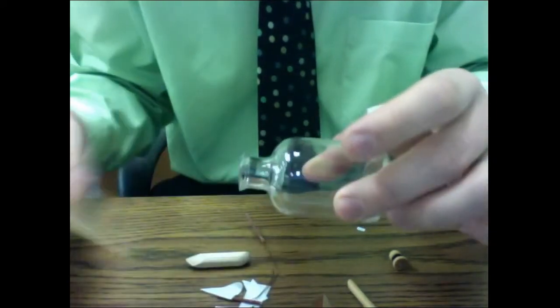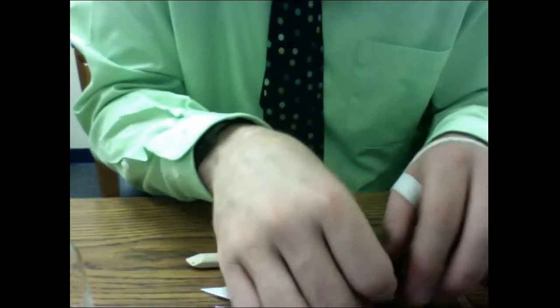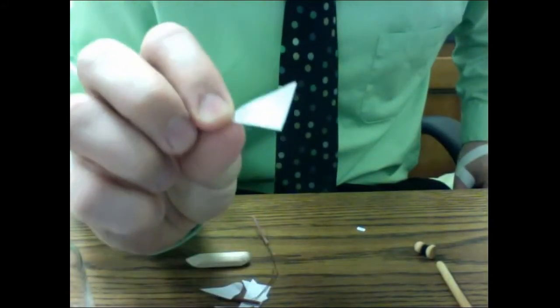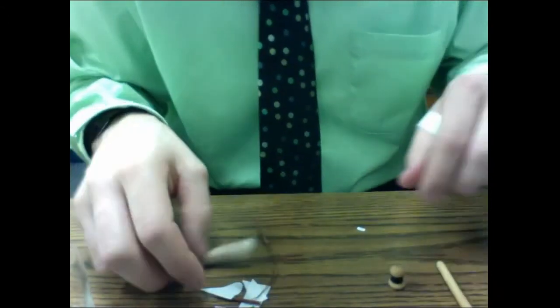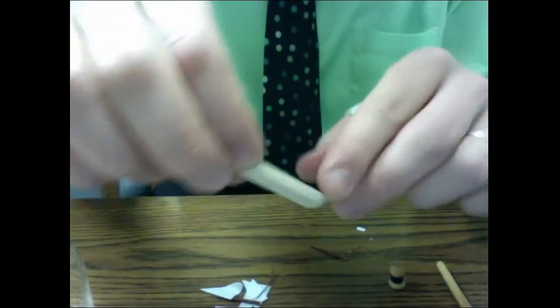Tweezers. Got to be able to put those pieces inside the bottle. Whoa, look at these sails. Look at the size of that sail. That's like a similar polygon. Cool. Man. Here's the little boat. Here's the hull.